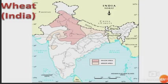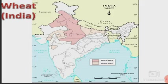In the map you can see the dark area showing the major wheat producing areas in India, covering a large part of the northern plains. The light area marks minor areas where wheat is grown.